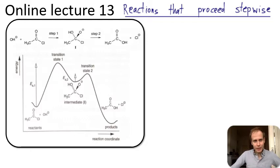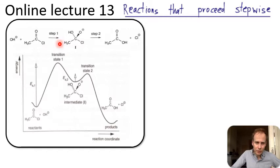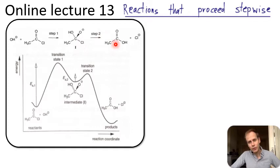Here, a nucleophilic attack by this hydroxide ion to this acyl chloride proceeds via two steps. First, it forms this intermediate abbreviated with an I, where the chlorine is still attached but the hydroxide has now attached. Then in step two, the bond is broken and the chlorine is released as a negative ion, and we reform the pi bonds between the carbon and the oxygen.